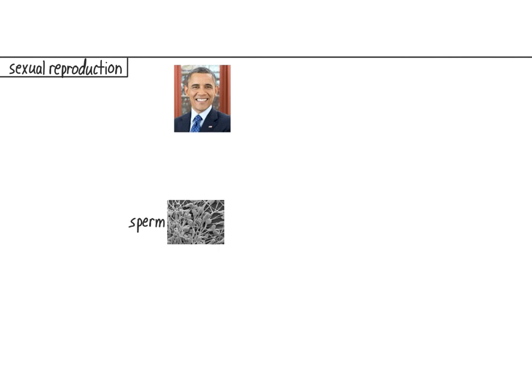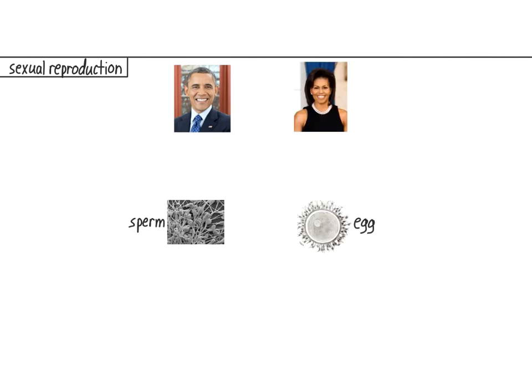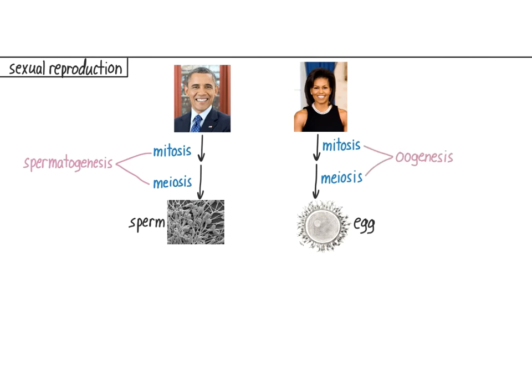First, let's review the basics of sexual reproduction. During sexual reproduction, a male creates sperm and a female creates an egg. This is accomplished through a combination of mitosis and meiosis. In males, this process is called spermatogenesis, and in females, it's called oogenesis. Genesis means the beginning of or the production of something. So spermatogenesis is the production of sperm, and oogenesis is the production of the ovum or egg cell. The plural for ovum is ova, but the plural for sperm is just sperm.